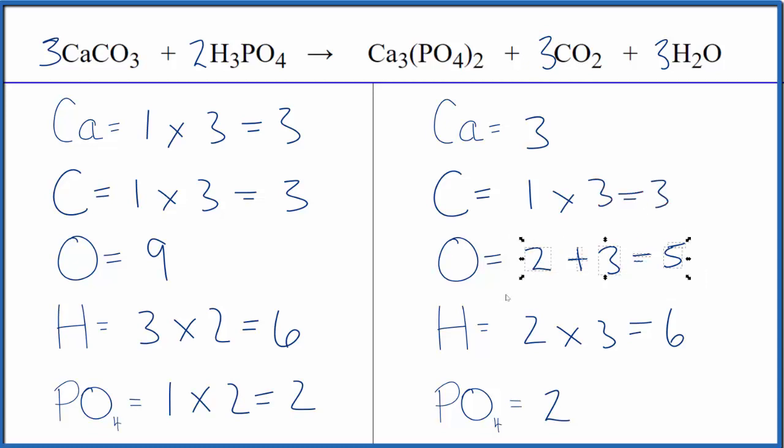Again, we need to update the oxygens. And hopefully this will balance the equation. Three times two is six plus three times one is three. That gives us nine. We're done. This equation is balanced.